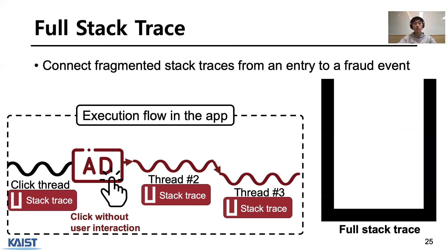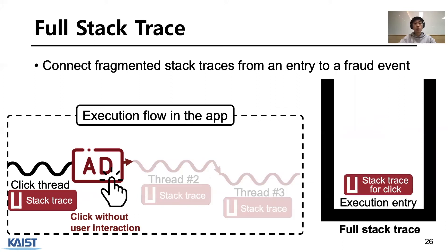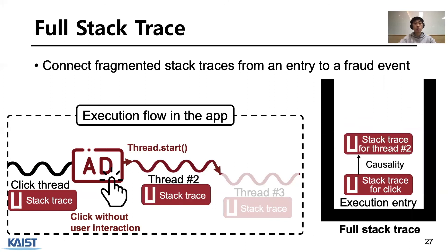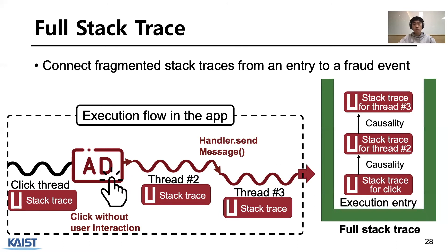Let's see how the full Stacktrace is generated from this execution flow. First, when the click occurs, our system saves the Stacktrace information. When Thread 2 is created by a new thread creation, we propagate the Stacktrace over the click thread. Also, when Thread 3 is invoked from Thread 2 using Android handler, it delivers Stacktrace information. If Thread 3 generates ad traffic, we can see through full Stacktrace analysis that the traffic was generated by the click.